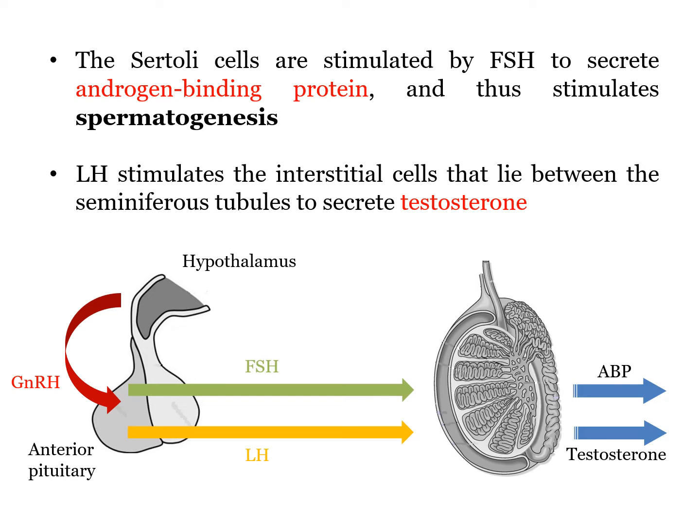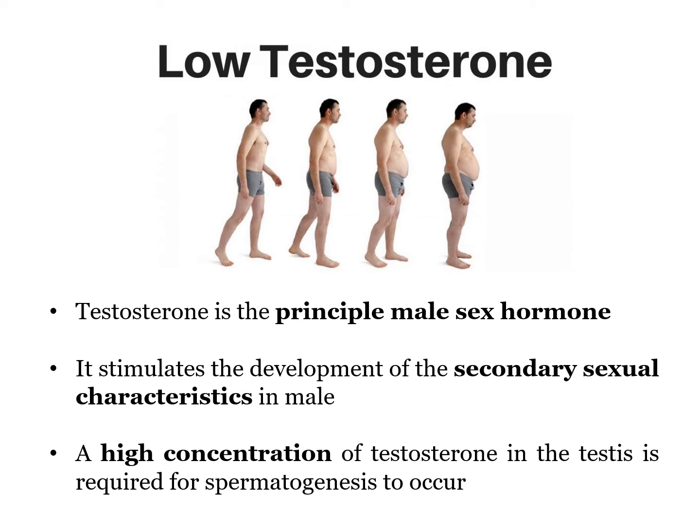In short, FSH and LH, which are released by the anterior pituitary gland, will trigger the testis to secrete ABP, the androgen binding protein, and testosterone. Testosterone is the principal male sex hormone produced by the human body. It affects a man's appearance and sexual development, and a high concentration is needed to stimulate sperm production as well as maintain sex drive.